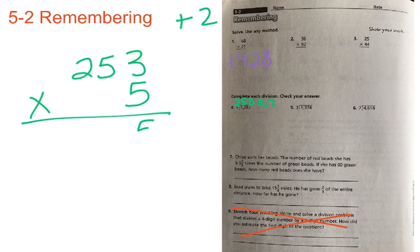So 5 times 3 is equal to 15. Put down your 5. Carry your 1. 5 times 5 is equal to 25. Plus 1 is equal to 26. Put down your 6. Carry your 2. 5 times 2 is equal to 10. Plus 2 is equal to 12.